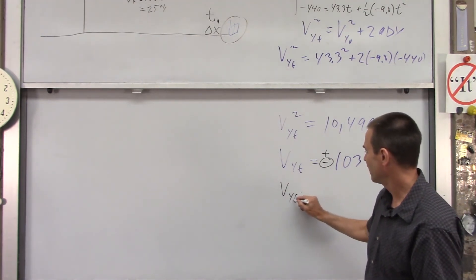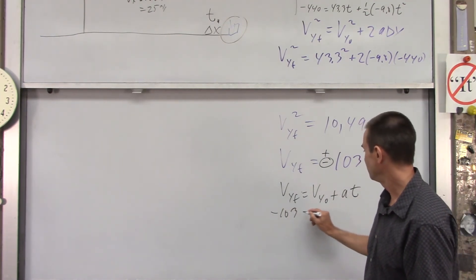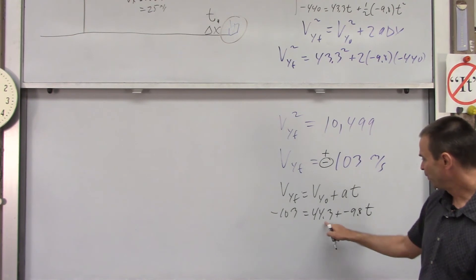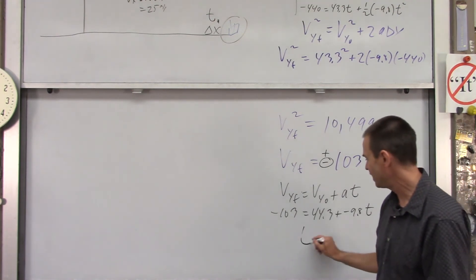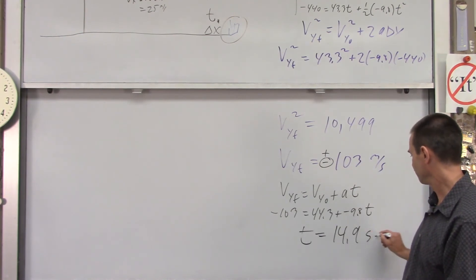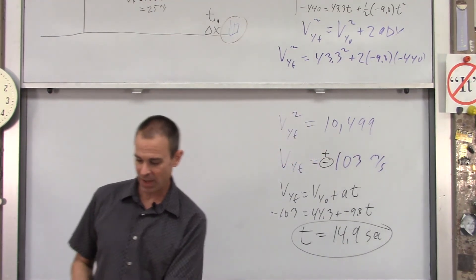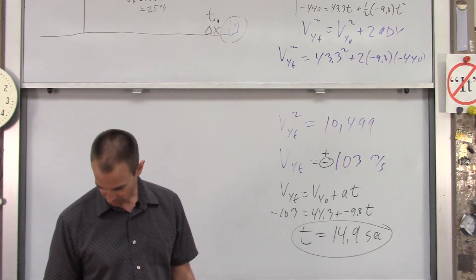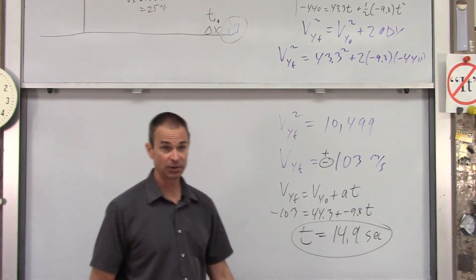Now, to find time, I'll use vy final equals vy naught plus at. This is negative 103 equals 44.3 plus negative 9.8 time. If you move this over to here, you get negative 147.3. Divide that by negative 9.8. You get a time of, I got 14.9 seconds. So, the book is in the air for 14.9 seconds total. Which, by the way, is longer than if you launch it horizontally. When we launch it horizontally, it was only in the air for nine and a half seconds, roughly. So, this is in the air much longer.